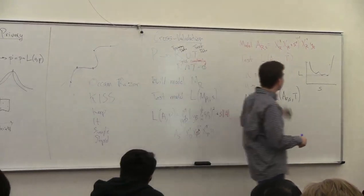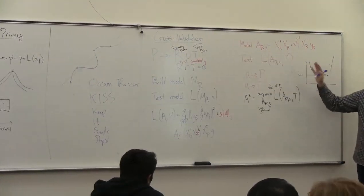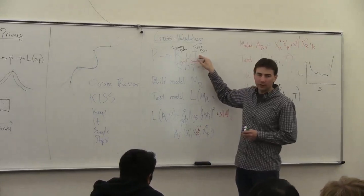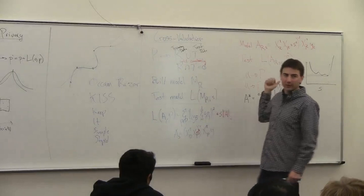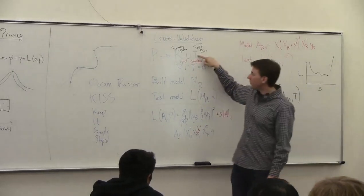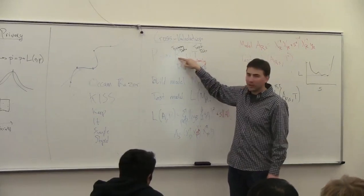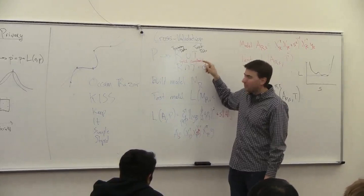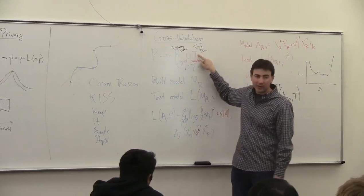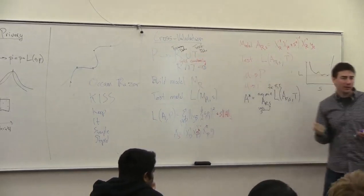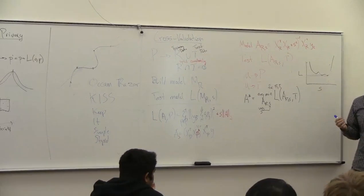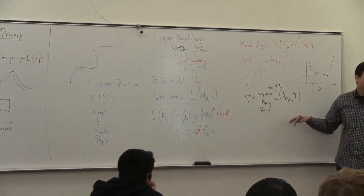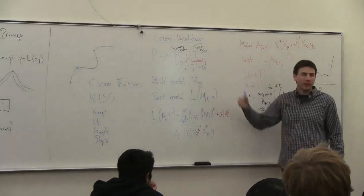This touched on another issue with cross-validation: I took my data set and split it into two parts, but if I split it differently I may have gotten a different solution. I'm testing on these data points but not others — so maybe there was something important I missed in my test set. Also, when I've taken part of my training data and given it to the test set, I have less data to build a model with.